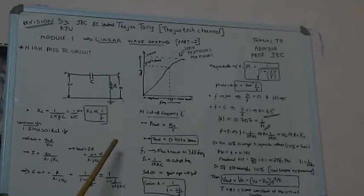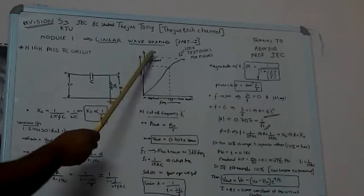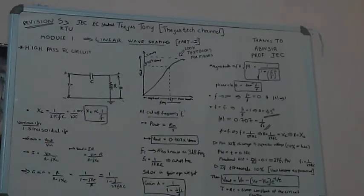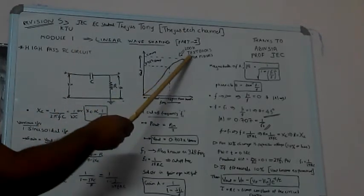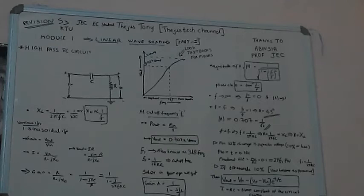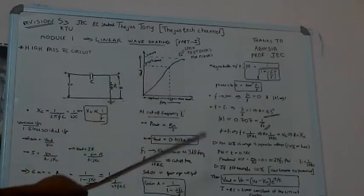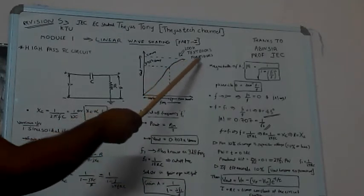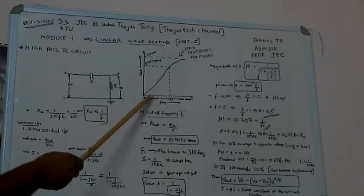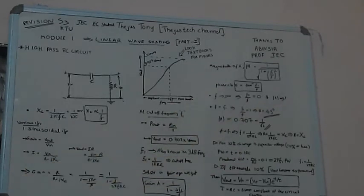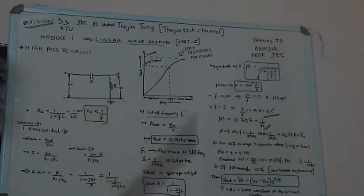What about the output voltage? Output voltage would be 0.707 times Vmax, where Vmax is the maximum output voltage obtained at the highest frequency. Since frequency increases, XC decreases, so output increases — at higher frequency we get higher output, because more current flows through the resistance. This 0.707 times Vmax point is where f1 is also known as the 3dB frequency, also known as cutoff frequency.